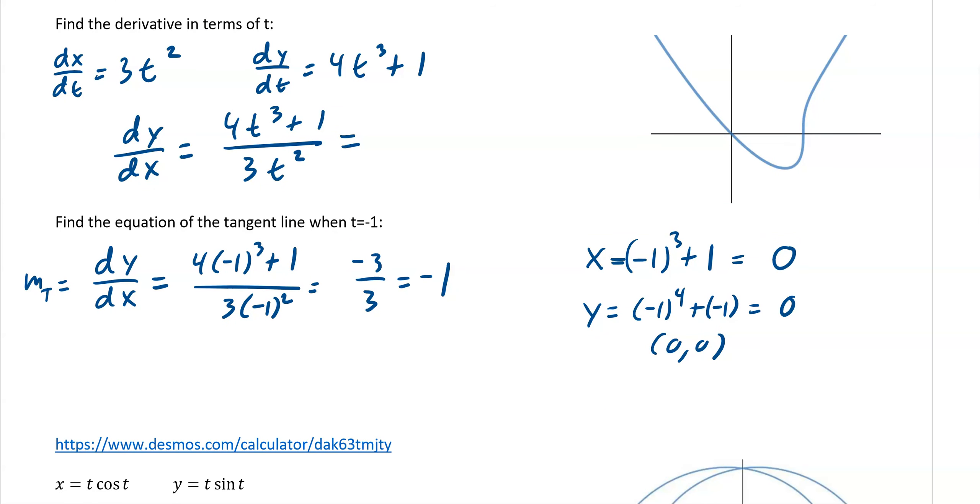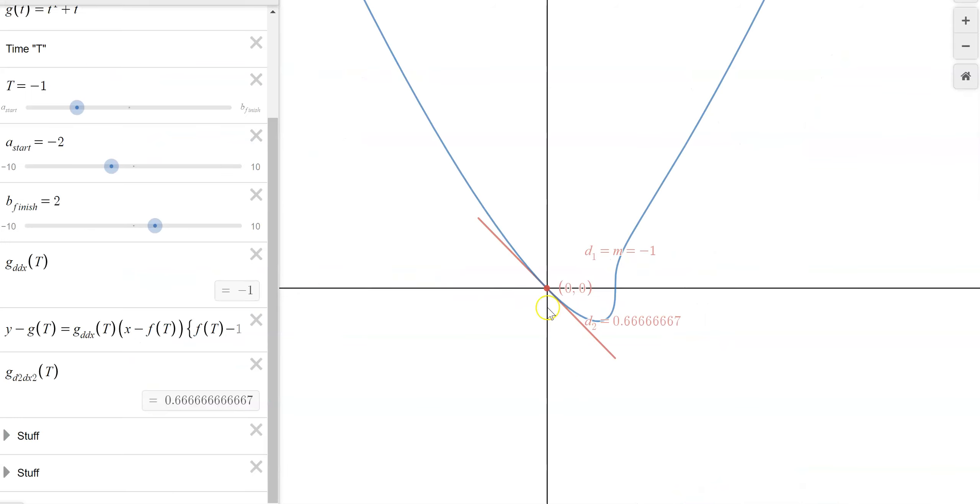So that would be 0 and that would be 0. So we have the point 0, 0. So now that we have a slope and we have 0, 0, we can go y minus 0, negative 1, x minus 0. So y equals negative x. And so that would be the equation of our tangent line. And you can see it has that perfect y equals negative x situation. But there's our y intercept is 0 with a slope of negative 1.